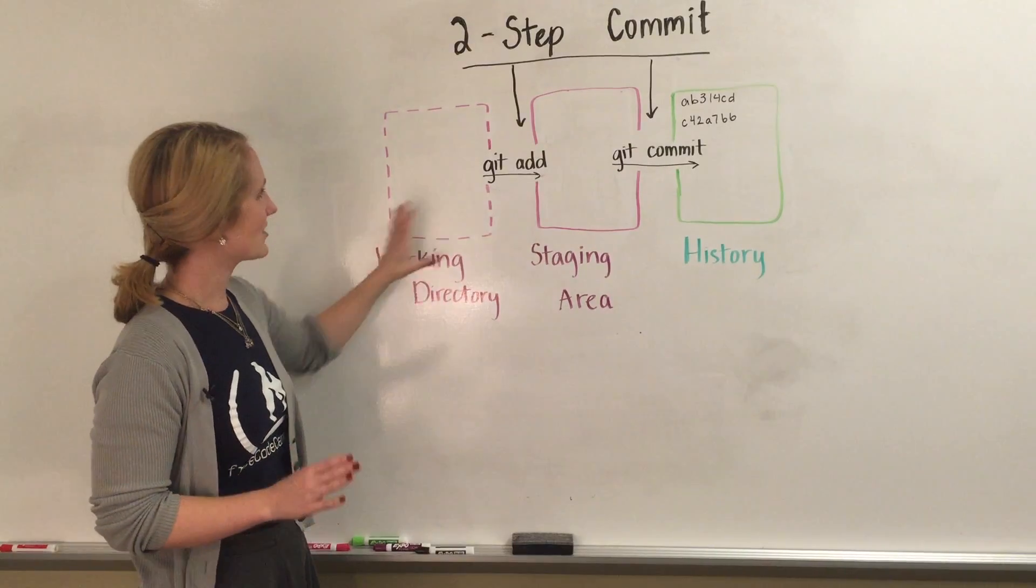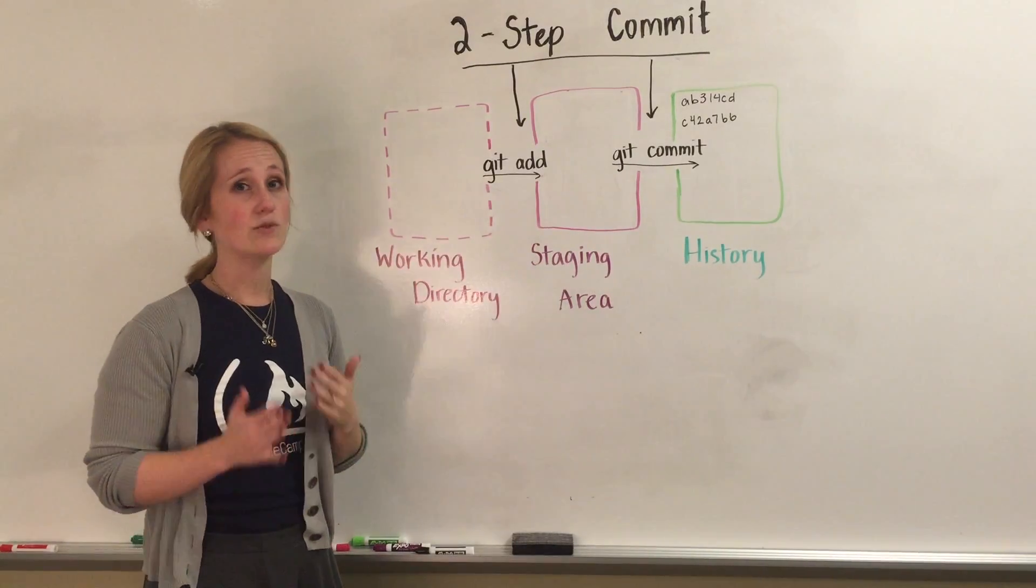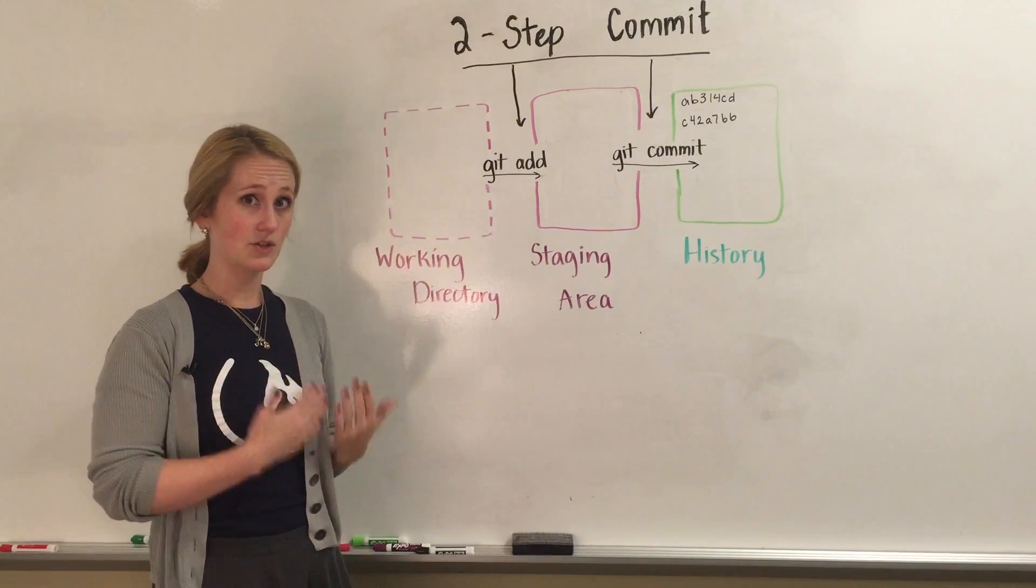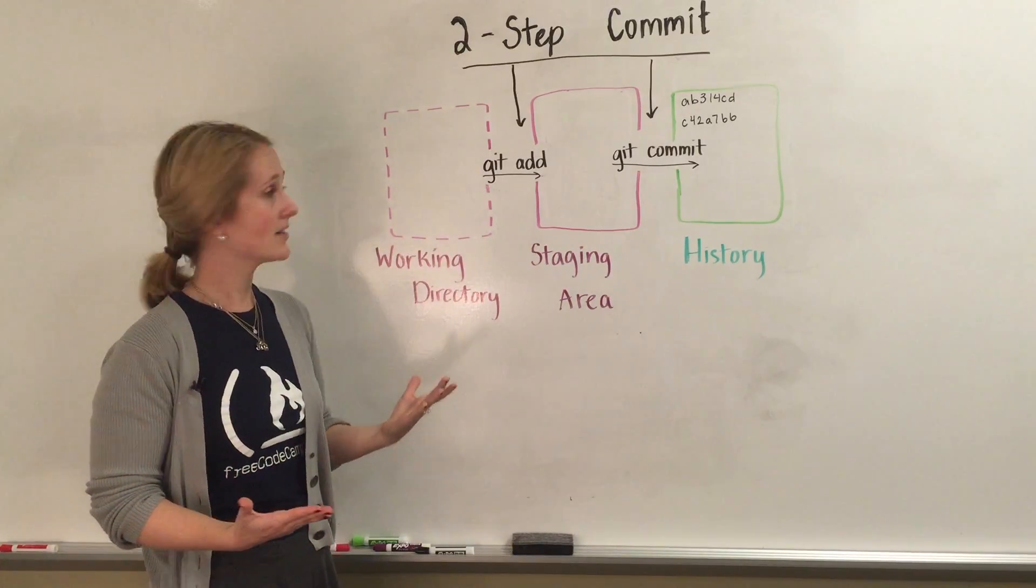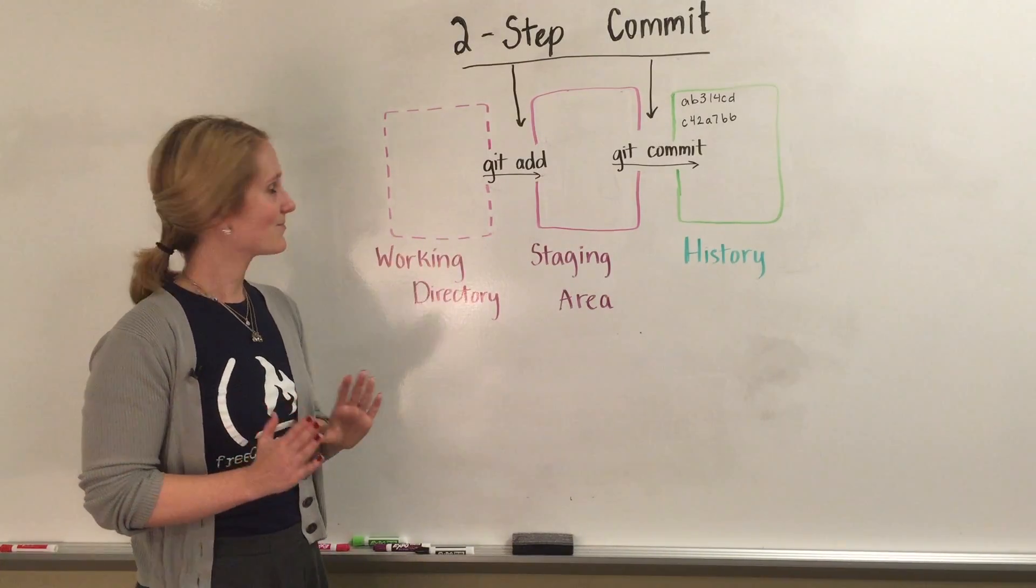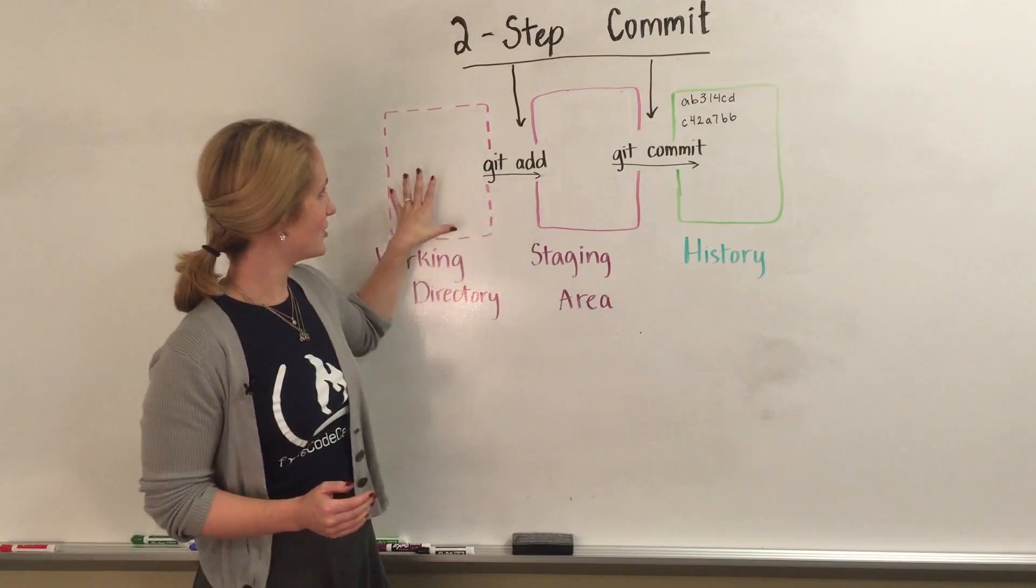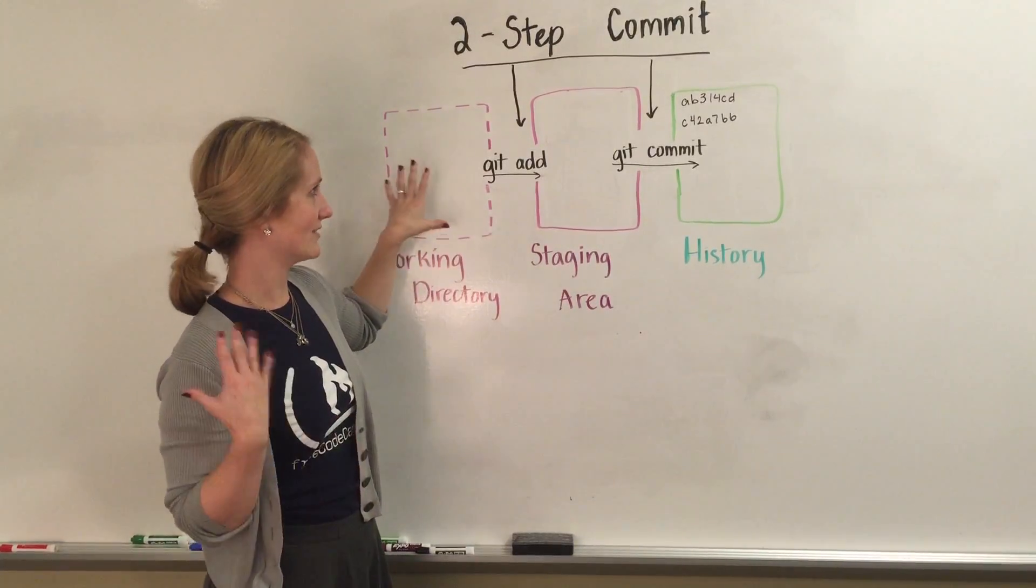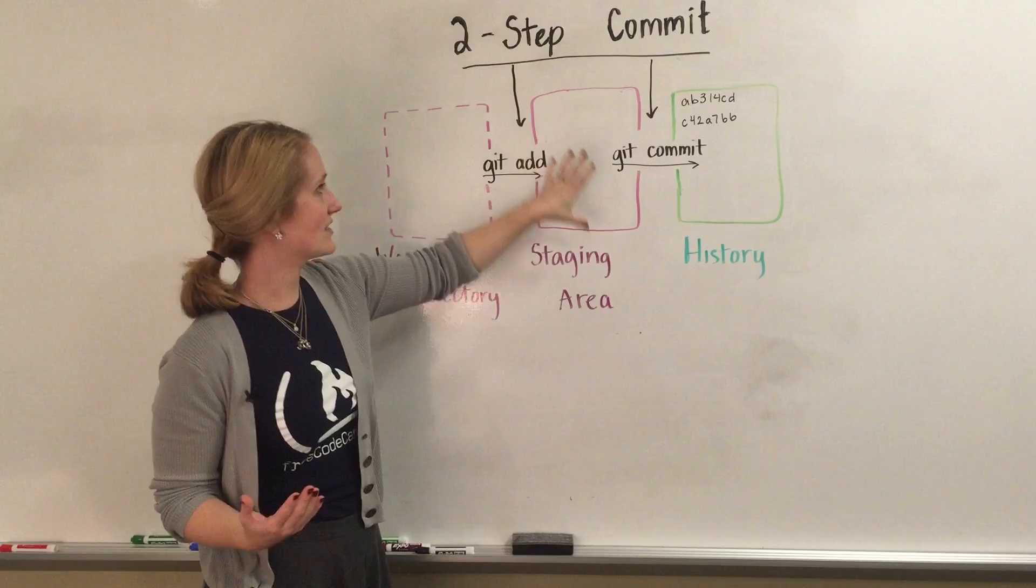That's okay. That's what git add is for. Git lets you choose exactly which files you want to include in the next commit. So let's say we want to do the index first. So we'll git add index.html and it'll move that file in git's metadata to the staging area.